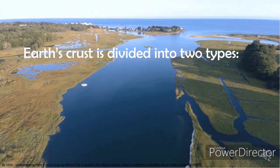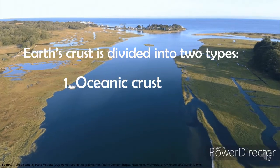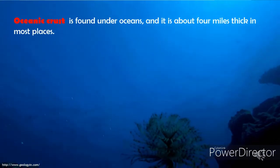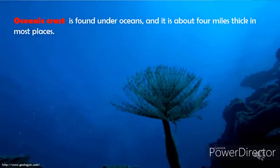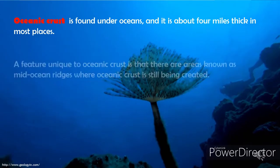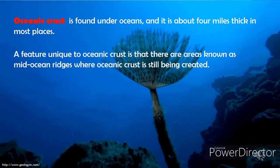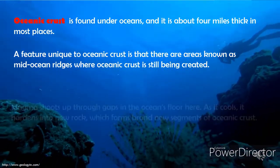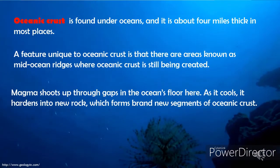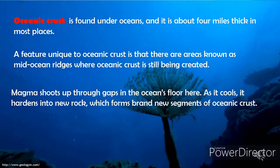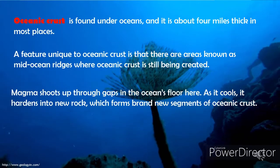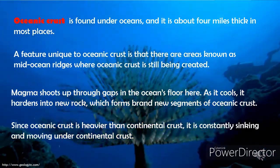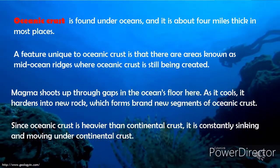Earth's crust is divided into two types: oceanic crust and continental crust. Oceanic crust is found under oceans and is about four miles thick in most places. A feature unique to oceanic crust is mid-ocean ridges where oceanic crust is still being created — magma shoots up through gaps in the ocean floor, cools, and hardens into new rock. Since oceanic crust is heavier than continental crust, it is constantly sinking and moving under continental crust.